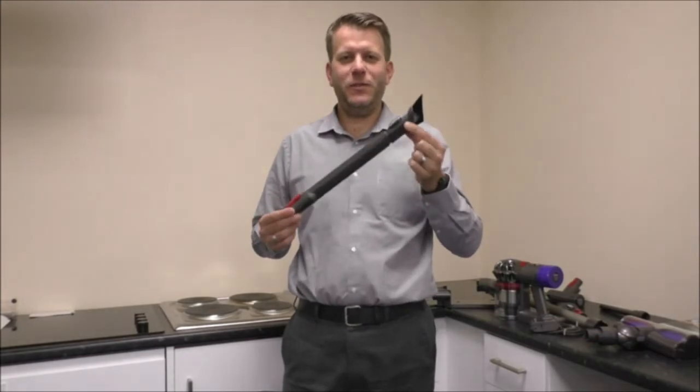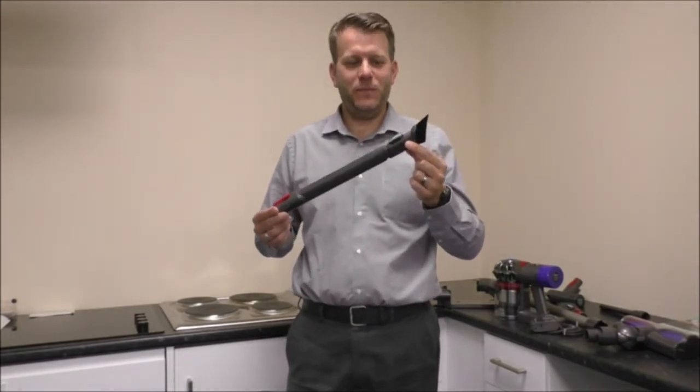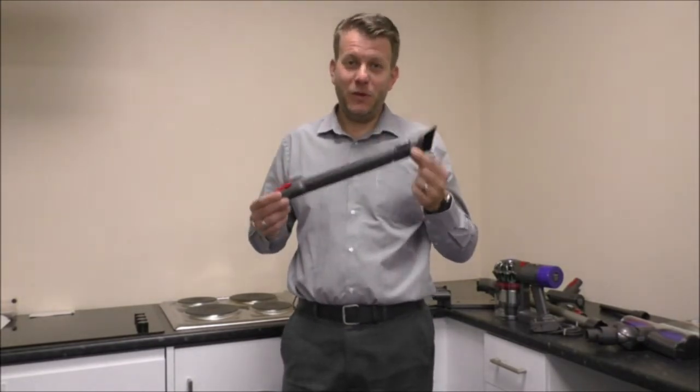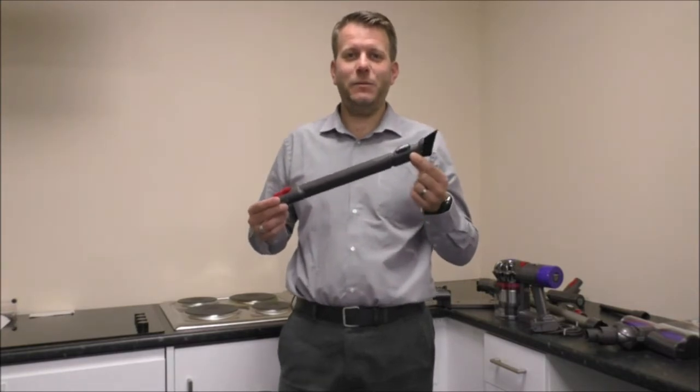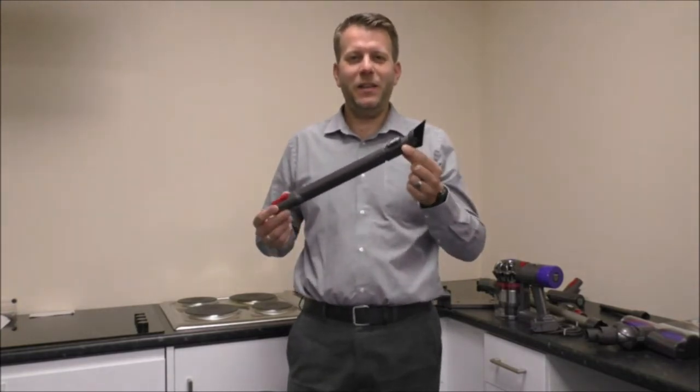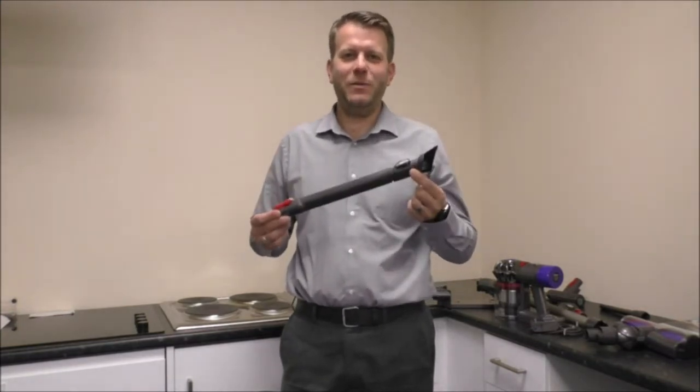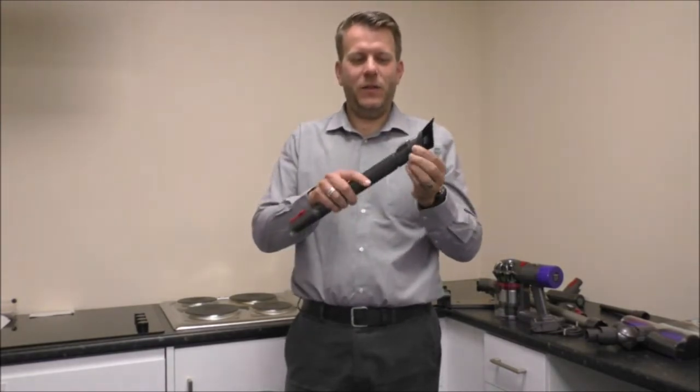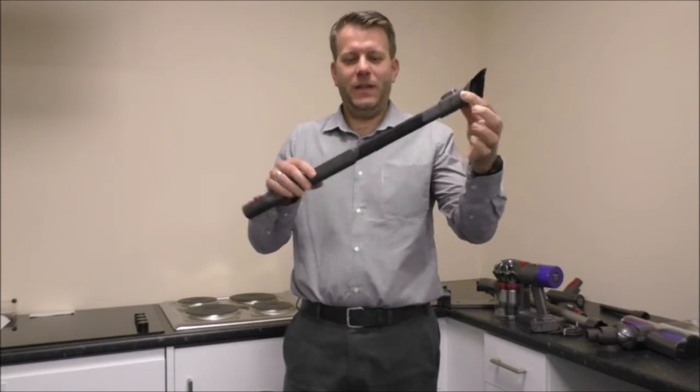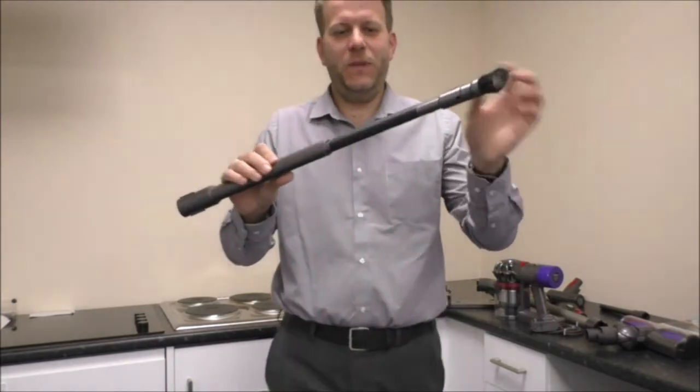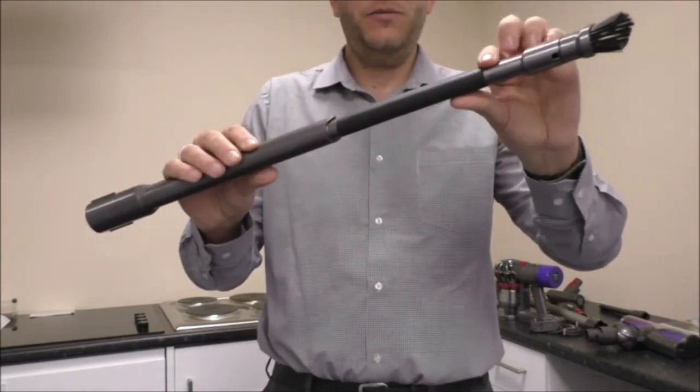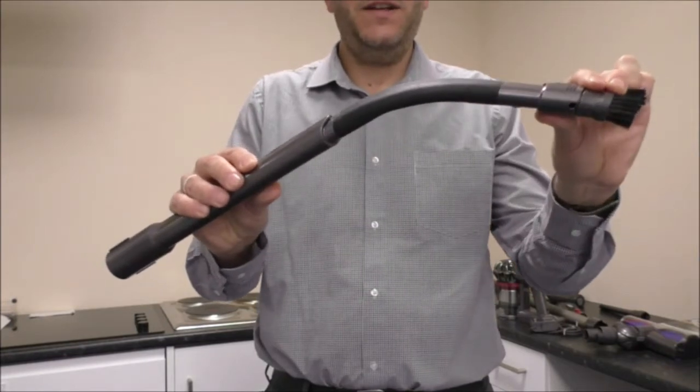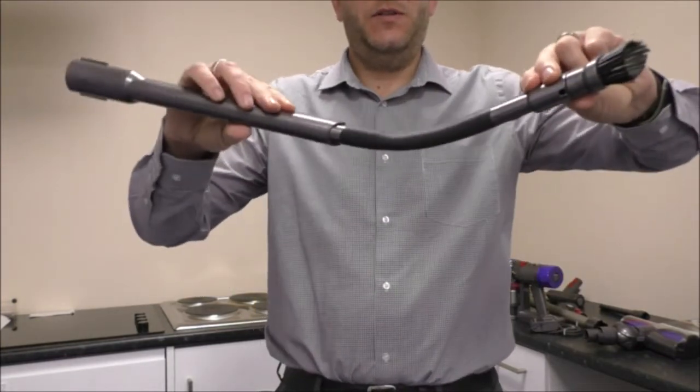The next tool I'll show you is this one, it's called the flexi crevice tool and the model of this vacuum cleaner is the V8 Animal Plus. To make it the Plus rather than normal V8 Animal is this tool, and the main advantage of this is it does extend like that. What you'll notice in here is that that's rubber and that is flexible so it bends both ways.